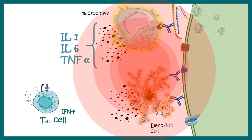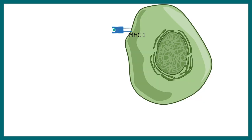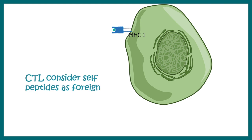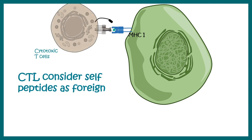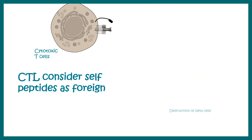This attracts the TH1 subpopulation of cells and many other cell types. Furthermore, any cell type can display its self-antigen on class I MHC molecules, and pancreatic beta cells do the same. However, these antigens — which are not supposed to be detected as foreign — are now recognized as foreign by cytotoxic T cells. As a result, cytotoxic T cells secrete perforin and granzyme, which kill the pancreatic beta cells.